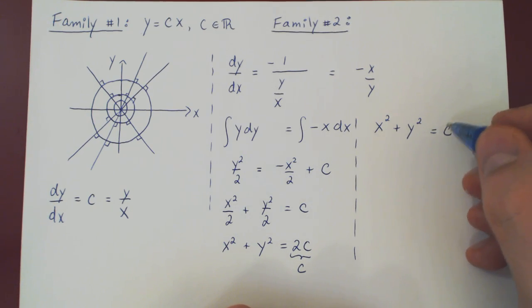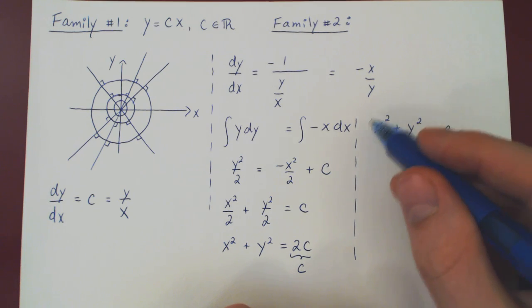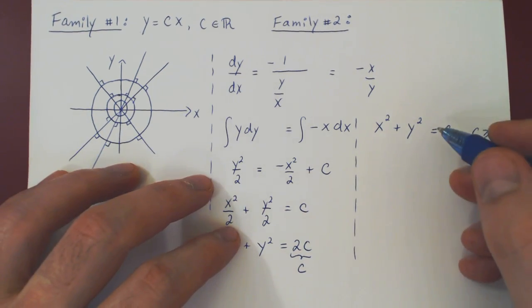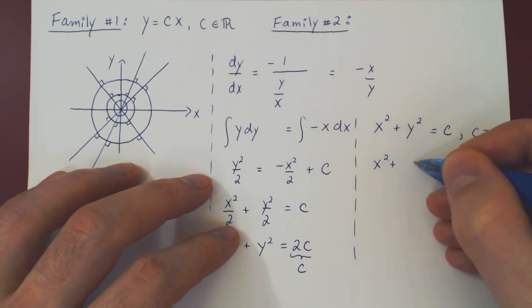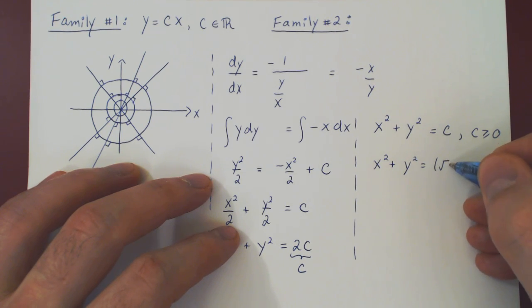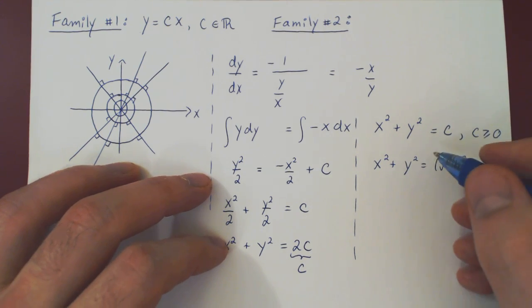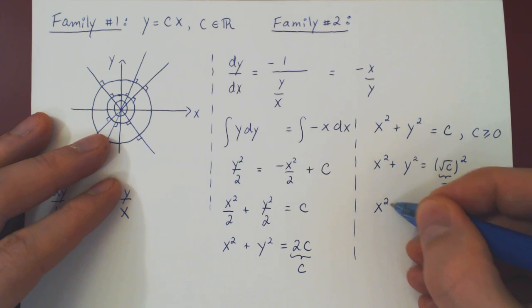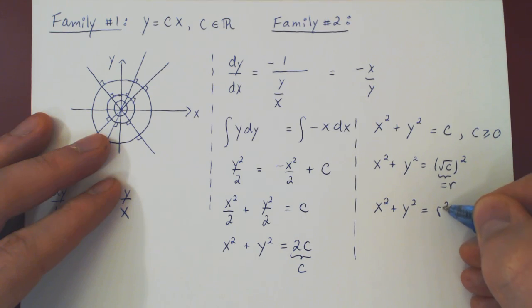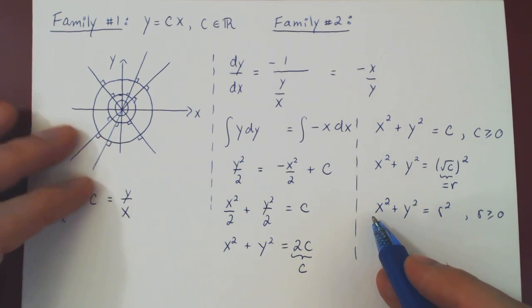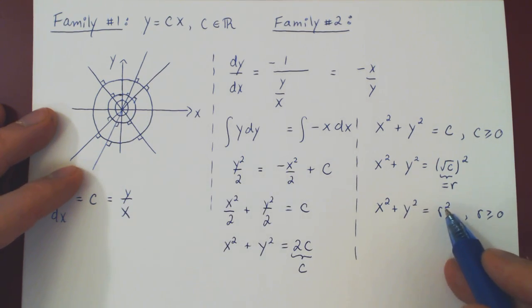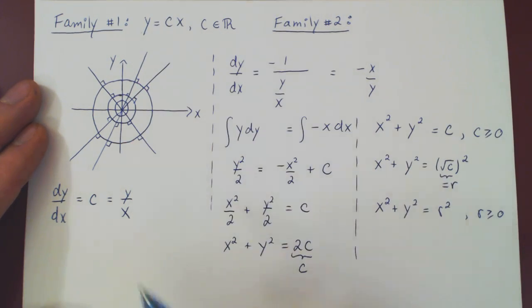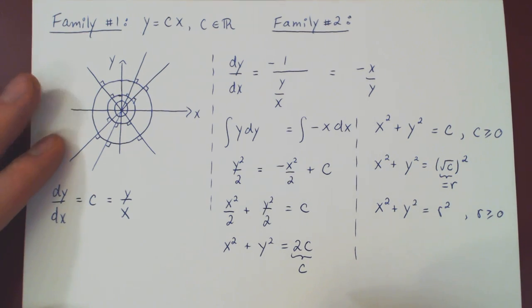One simple observation first. If c is negative, then we get no solution. As we have a sum of squares, and this is always non-negative, so we ask that c be non-negative. But now, we can rewrite the expression in the form x squared plus y squared. And as c is at least 0, c is the square root of c squared. And because c now is an arbitrary positive constant, I can replace c by, say, r. And the equation becomes, quite simply, x squared plus y squared equals r squared, where r is non-negative. And this is the equation of a circle centered about the origin of radius r. So, mission accomplished. We have just proved that the orthogonal family of curves to the original family consists of all circles centered about the origin. And this is our conclusion.